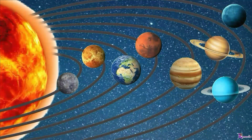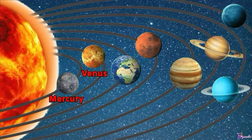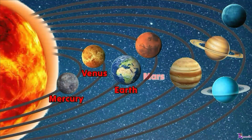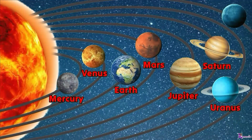Now it's your turn. Let's say it all together. Mercury, Venus, Earth, Mars, Jupiter, Saturn, Uranus, Neptune.